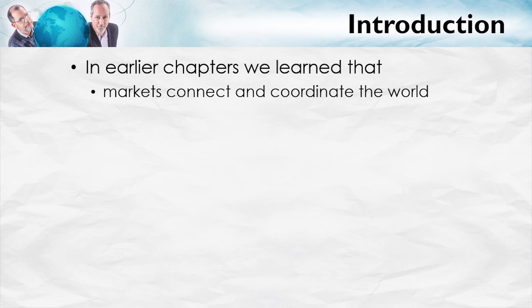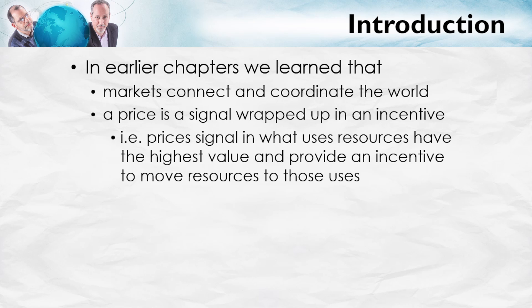For context, recall that in earlier chapters we learned that markets connect and coordinate actions all over the world. Think about roses and the coordination of actions which was necessary to deliver fresh roses to your door on Valentine's Day. We also learned that a price is a signal wrapped up in an incentive — prices signal in what uses resources have the highest value, and they provide an incentive to move resources to those high-valued uses.